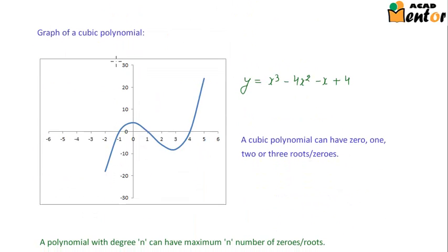Let's look at the graph of a cubic polynomial. Suppose there's a cubic polynomial given by y = x³ - 4x² - x + 4. When we draw this polynomial on a graph, we see there are three points where it intersects the x-axis. Let's call these three points A, B, and C.